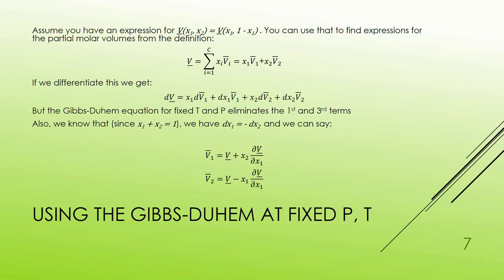If I were to differentiate this, I'm going to get, just using product rule on each piece there, X1 DV1 plus DX1 V1, X2 DV2 plus V2 DX2. But the Gibbs-Duhem equation, if I'm fixing temperature and pressure, is going to eliminate this first and third term. These add up to zero. And so, I'm left with just these other pieces here.